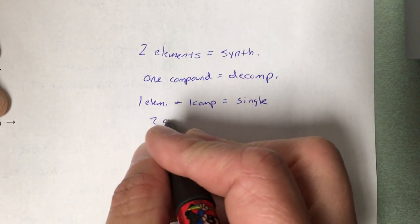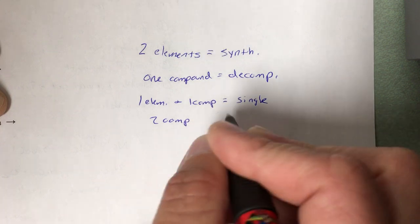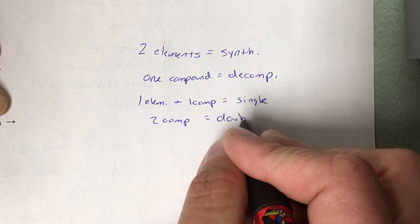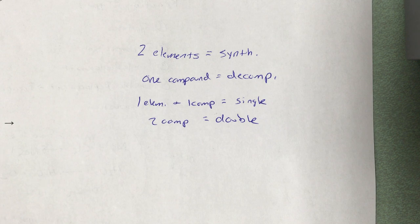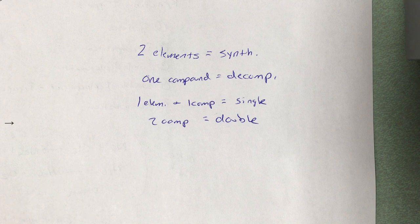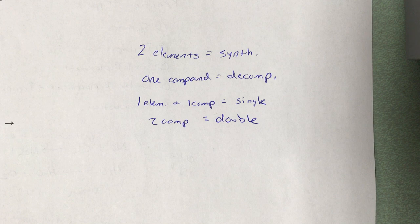If I give you two compounds, then that's double replacement. You just take the first half of the compounds and swap them — you can swap the second halves either way — but the easiest way is to split the compound in half and swap the first parts and write your new formulas. Almost all these reactions here are ionic, so you'll use the crisscross method to write your formula.